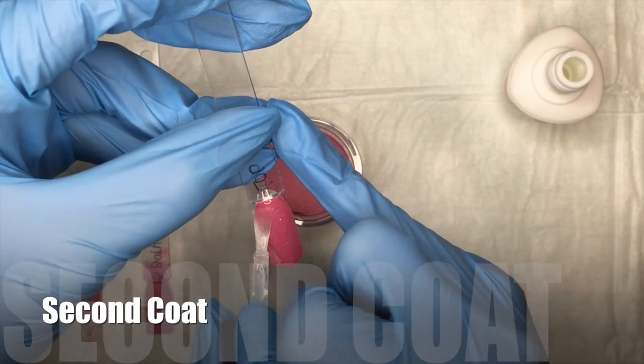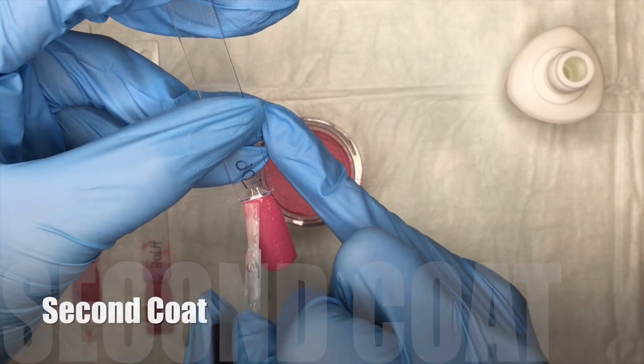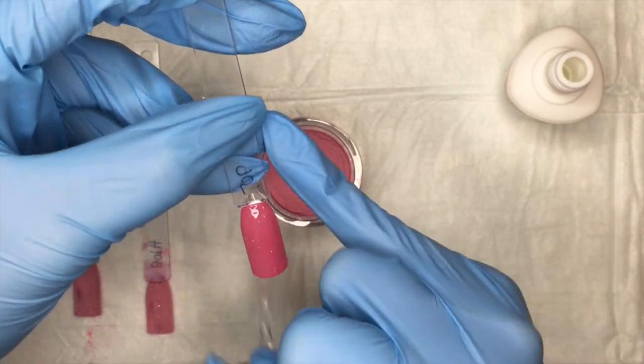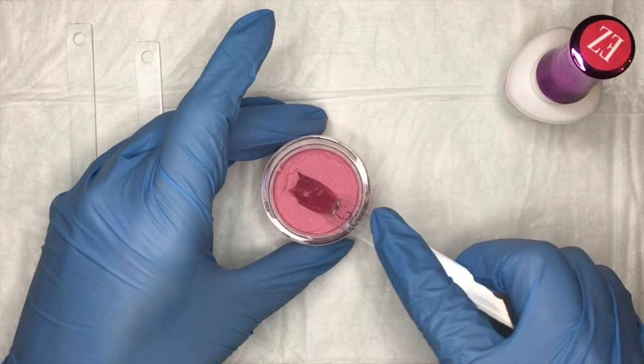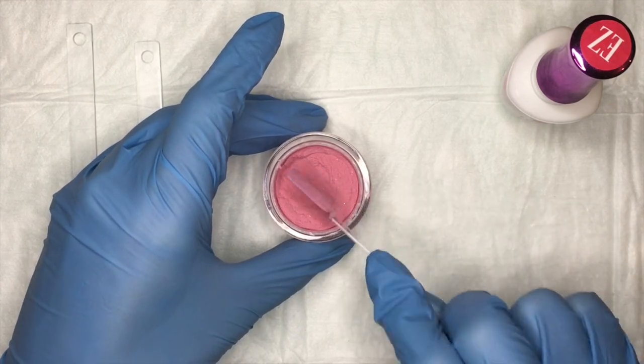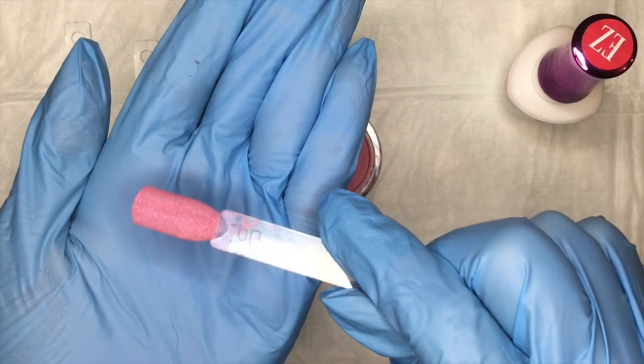And I'm going to do the same thing for all three of them. So for the top, I'm doing the second coat only on the top. The underside one, I'm doing a second coat only on the underside. And the both swatch, I'm doing another swatch on the underside as well. So it's the same exact steps as the first one.